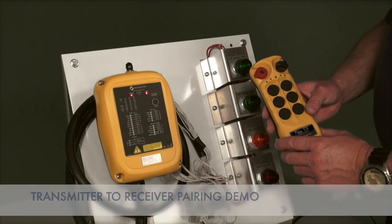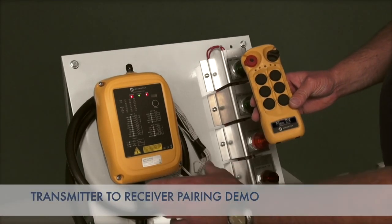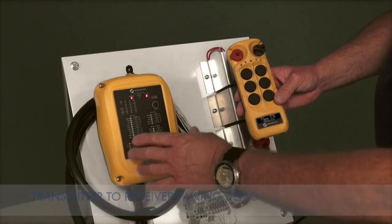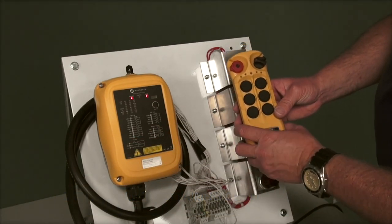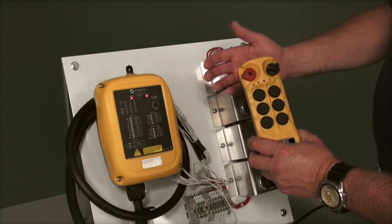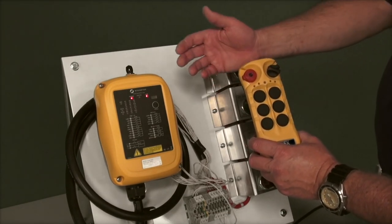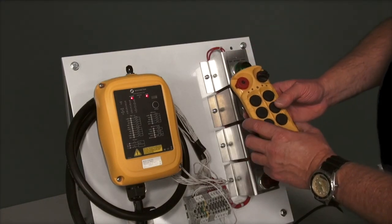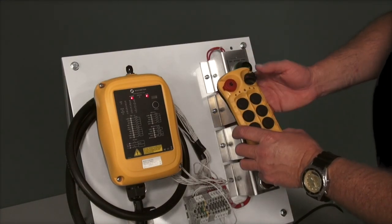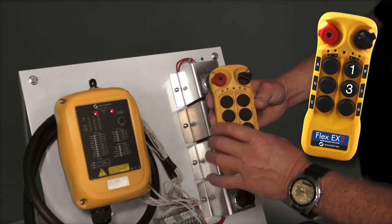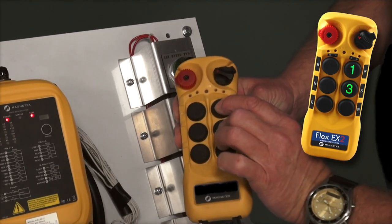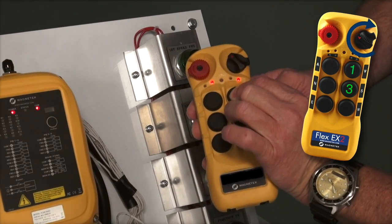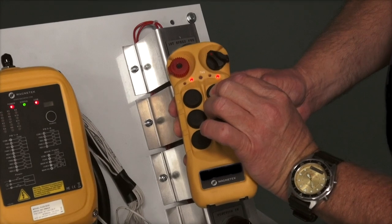We're going to demonstrate pairing between a Flex EX2 receiver and a Flex EX2 transmitter. This is accomplished by an RF signal being sent from the receiver to the transmitter. To start, we make sure the E-stop button is out. We're going to depress buttons number 1 and 3 on the transmitter. I'm going to turn the transmitter on.